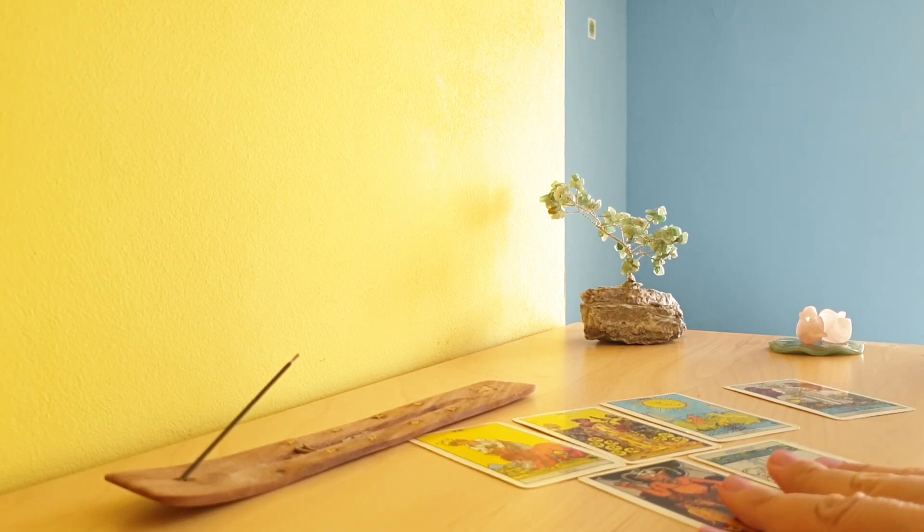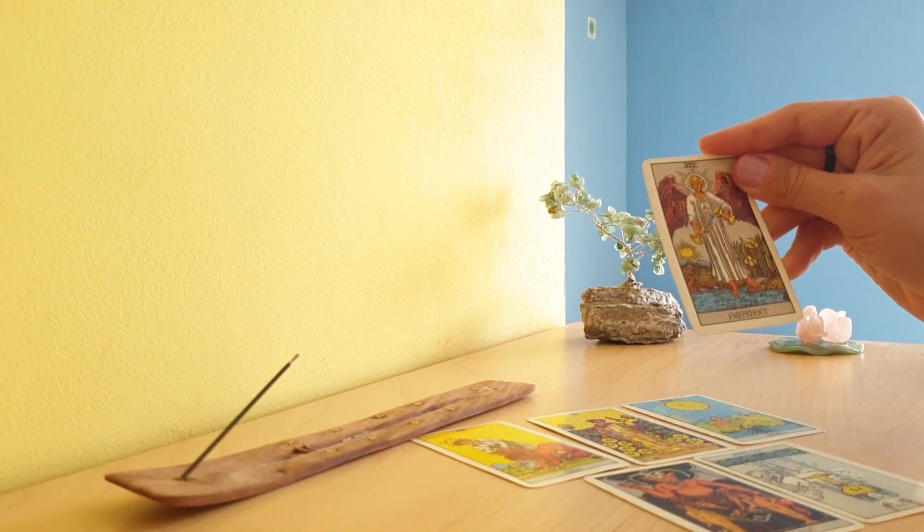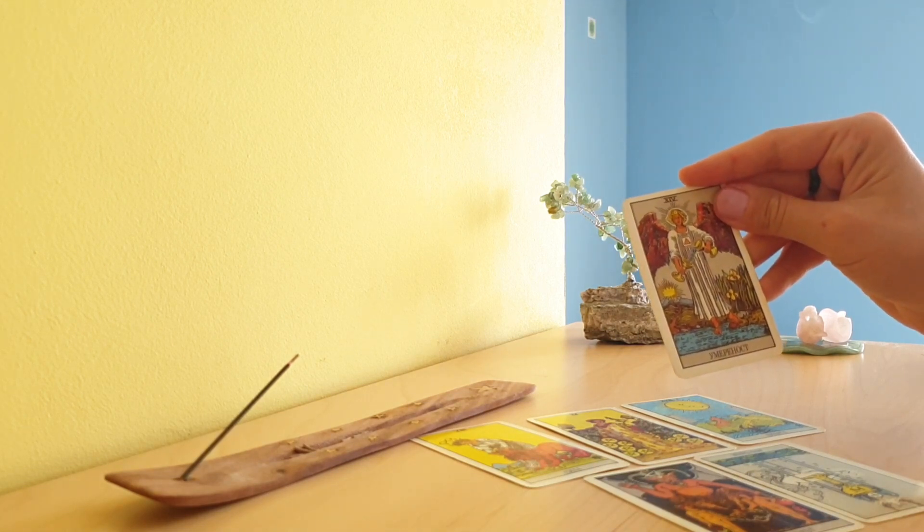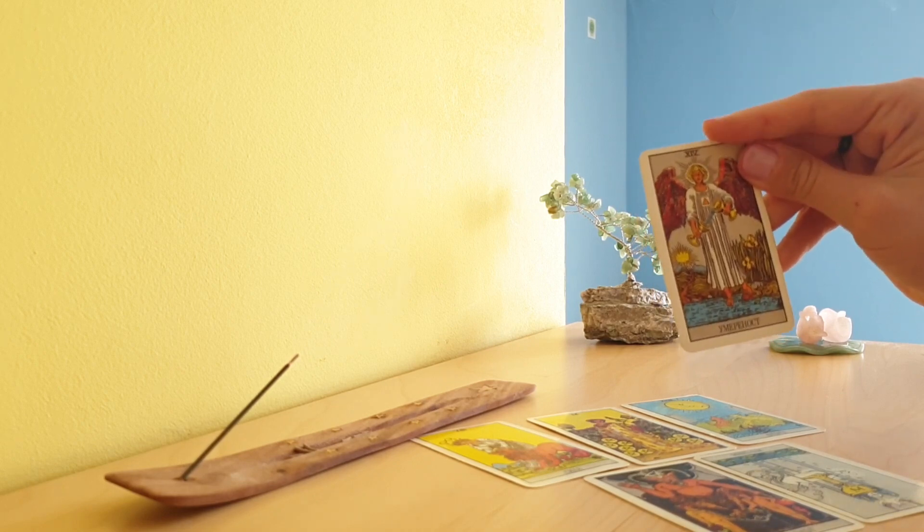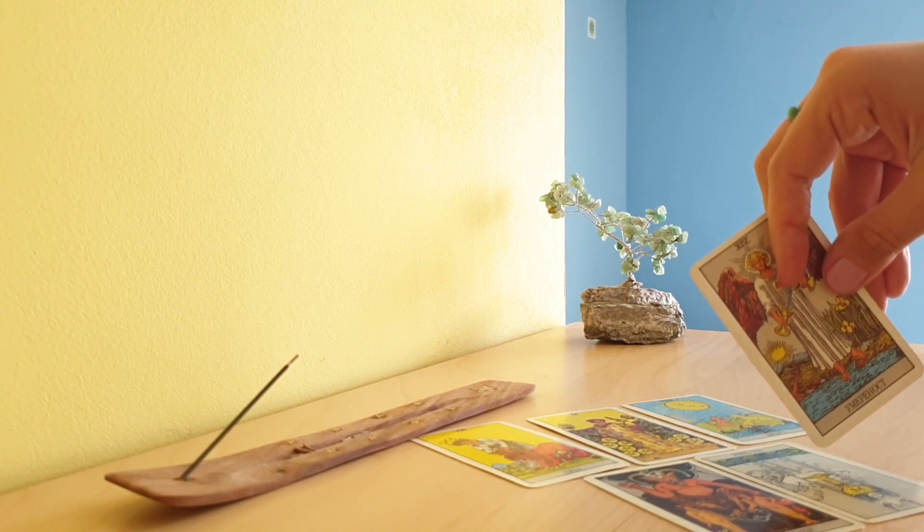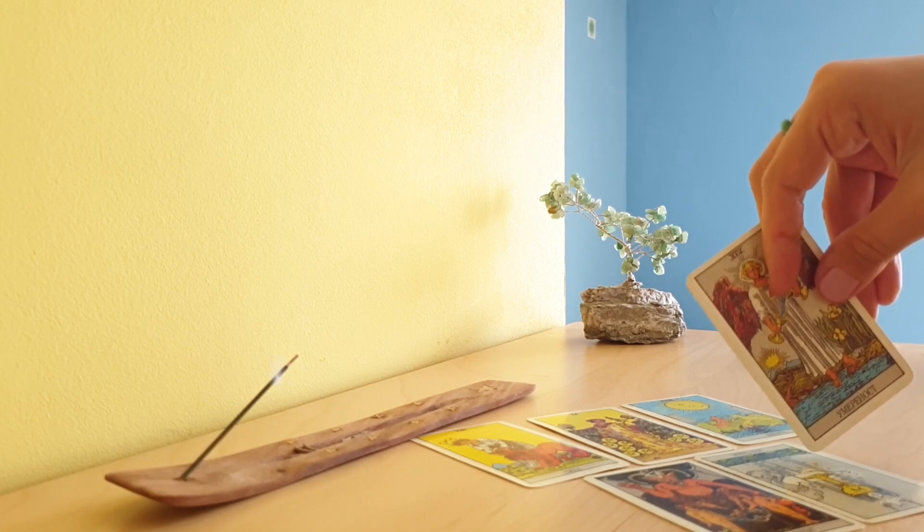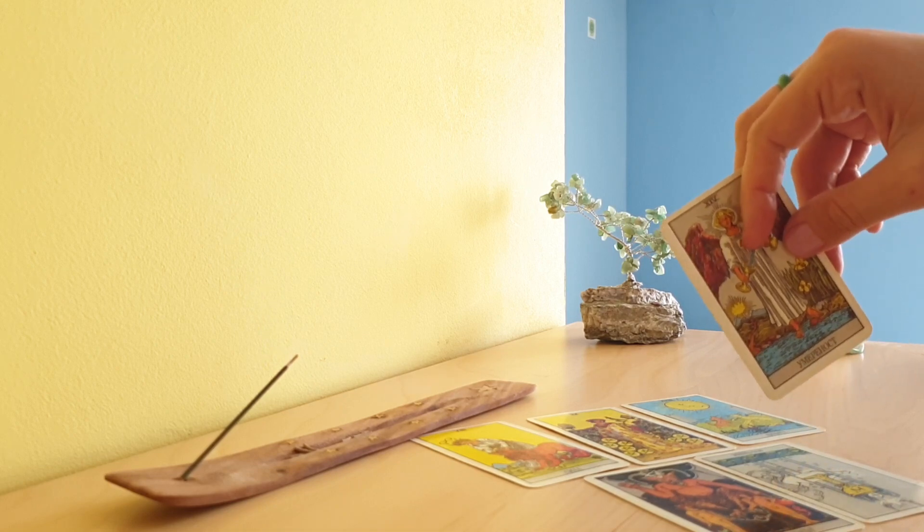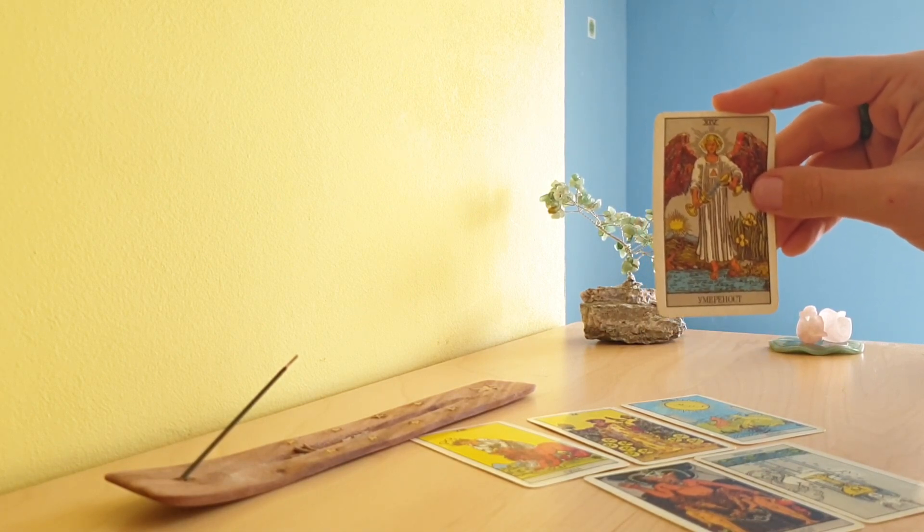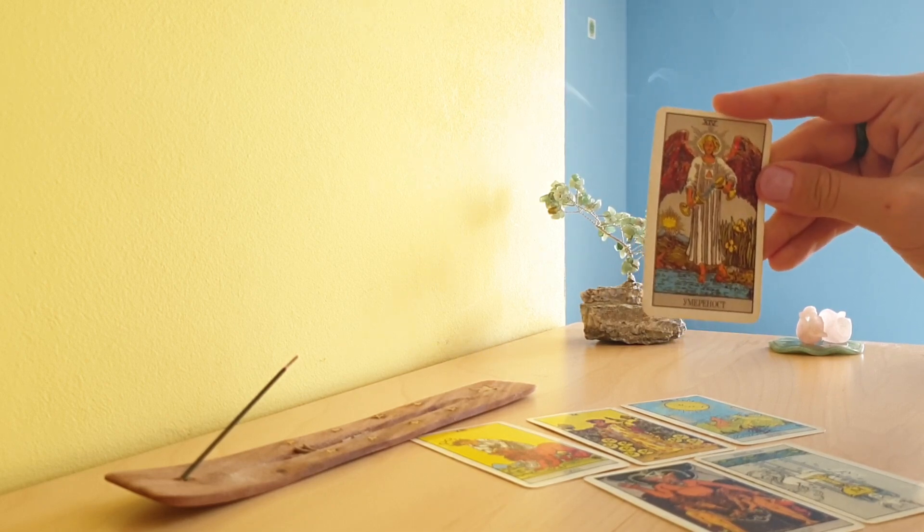The hidden card is Temperance. So keep things in balance. Temperance is really advising him to keep his emotions in check. Temperance has a lot of meanings, but in this case the feeling that I have is that he needs to not be a slave of his emotions.